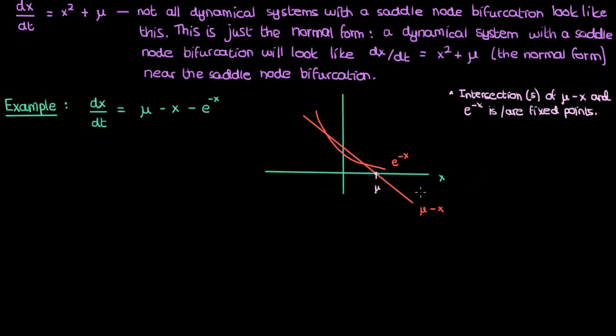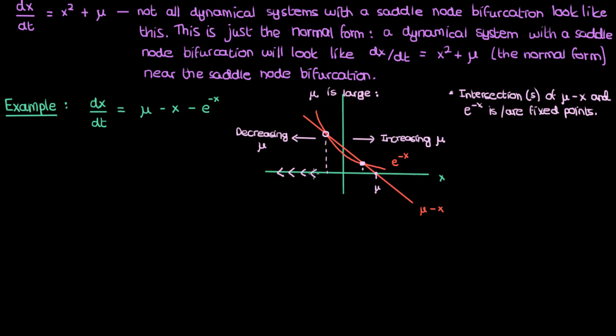The parameter μ denotes the x-intercept of the straight line μ − x. Increasing μ moves the line right; decreasing μ moves it left. For a relatively large μ, the line intersects the exponential at two points — two fixed points. The left fixed point is unstable and the right is stable. On the left of the unstable fixed point, the exponential exceeds the line so dx/dt is negative; on the right it's positive. Trajectories diverge from the left fixed point, confirming it's unstable.